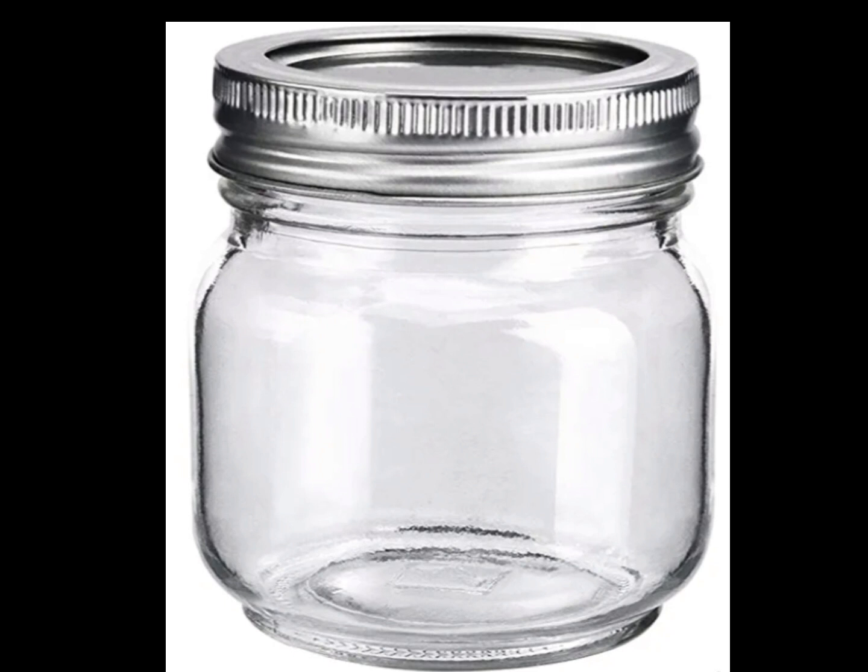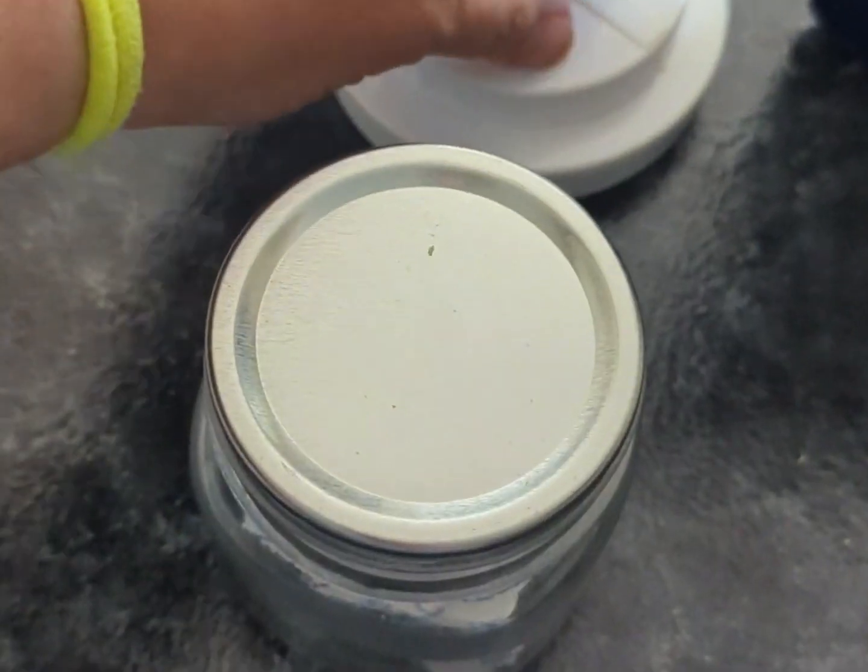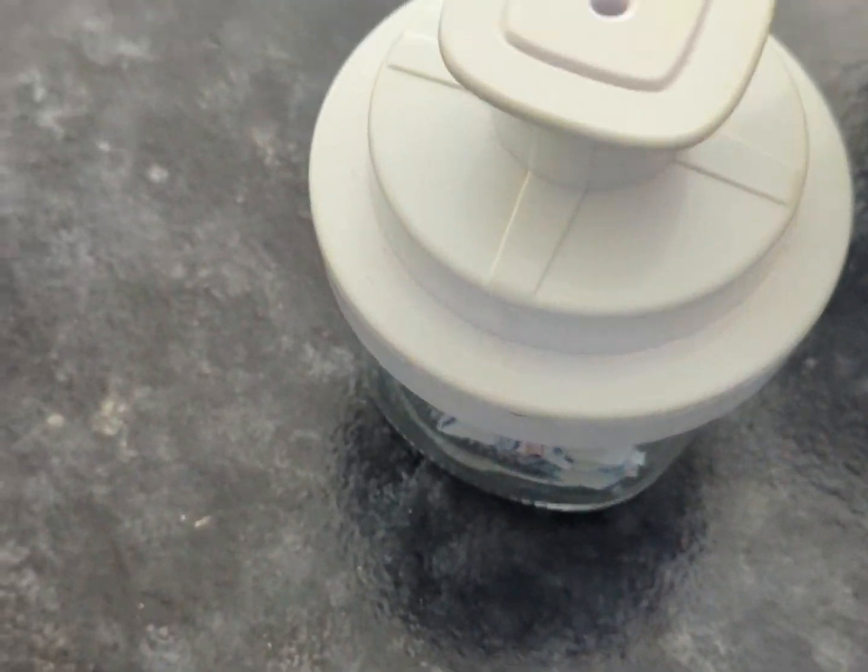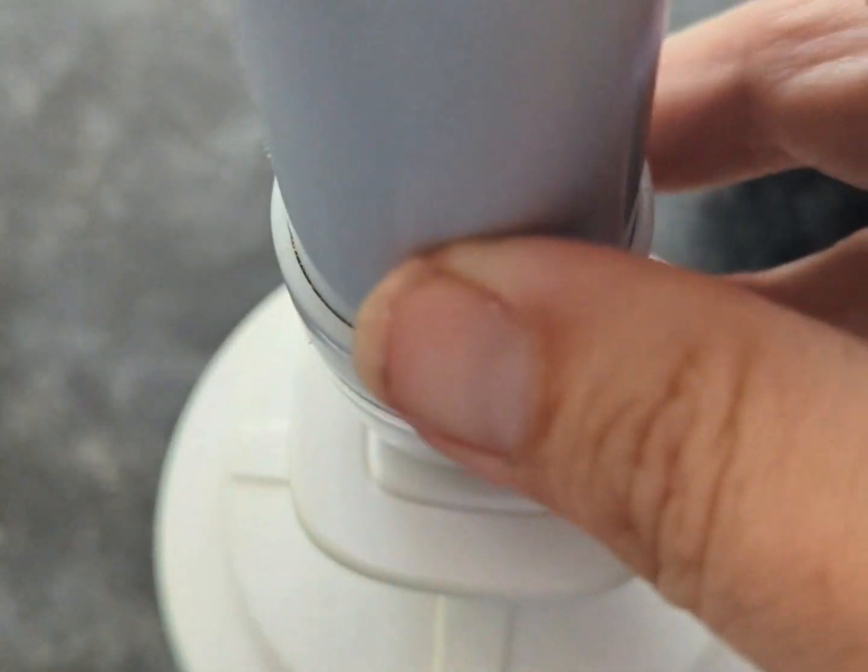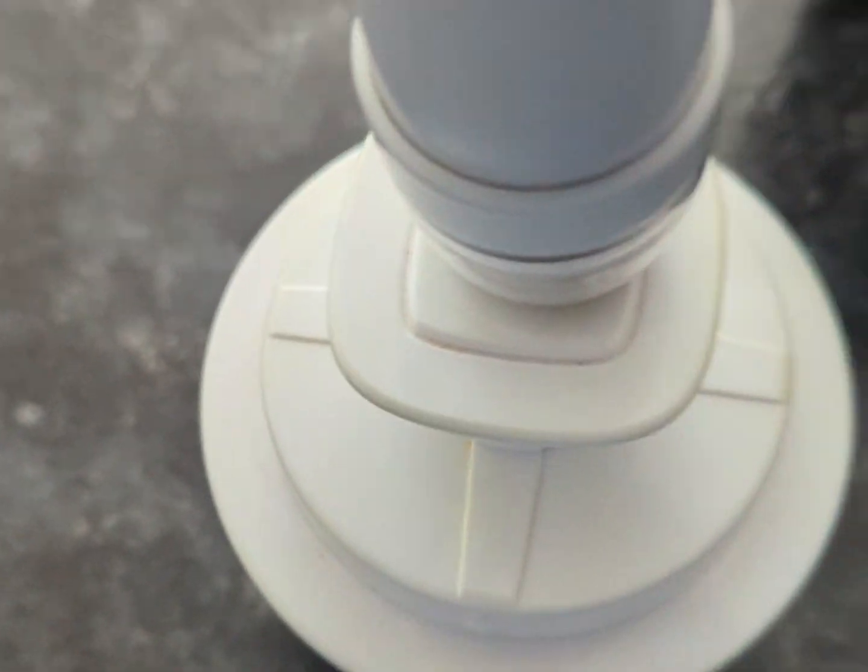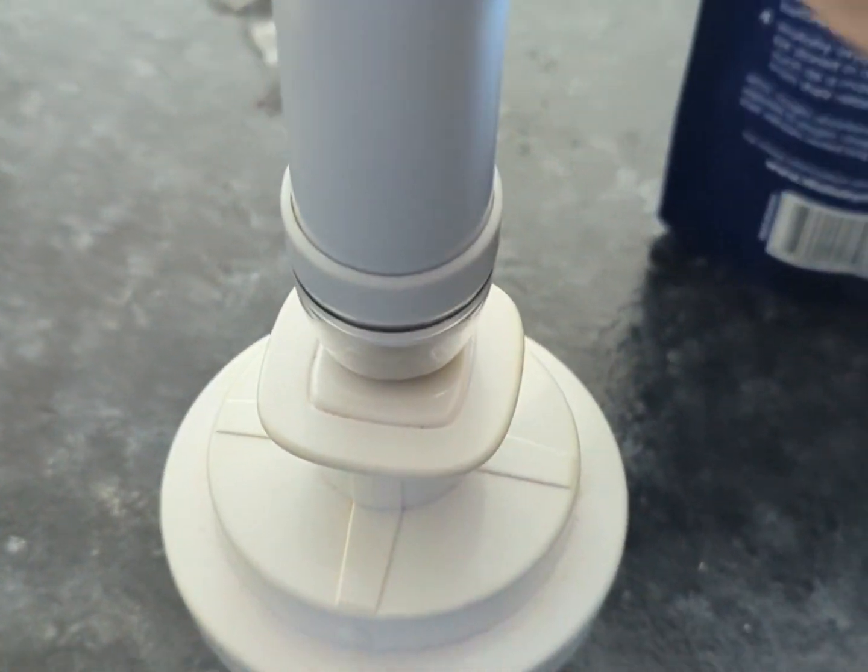I put the lid on the top and use this manual jar sealer. You can use an attachment to a food saver machine, however I like simple. And when SHTF happens, you will want something manual.